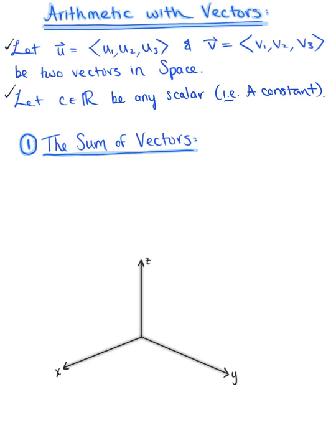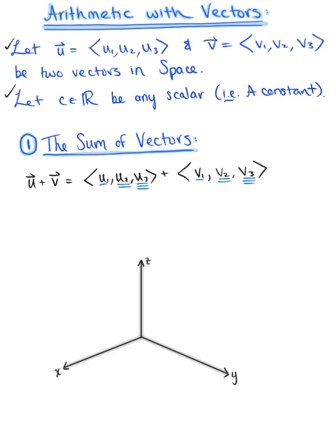We also want to let c be any scalar, meaning any constant value. So how do we define the sum of these two vectors? Vector u plus vector v means we're going to add the like components. We have u sub 1, u sub 2, u sub 3, and we're adding vector v, which is v sub 1, v sub 2, v sub 3. Adding the x components, y components, and z components together gives us u sub 1 plus v sub 1, u sub 2 plus v sub 2, and u sub 3 plus v sub 3.